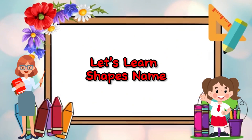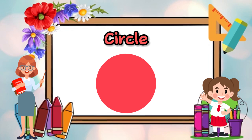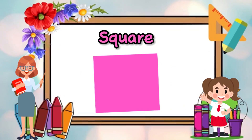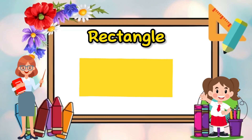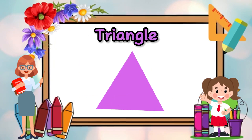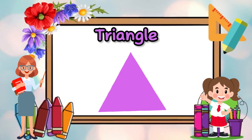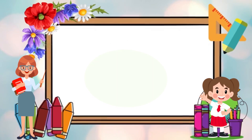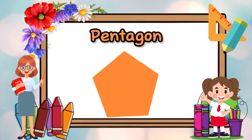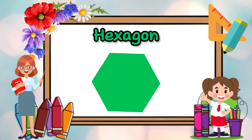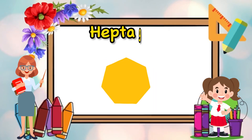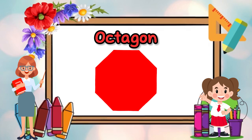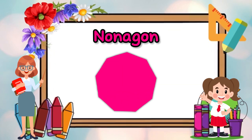Let's learn shape's name. Circle. Square. Hexagon. Heptagon. Octagon. Nonagon.